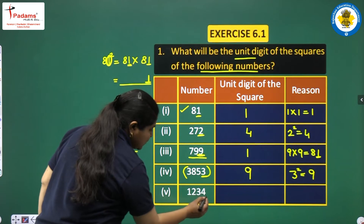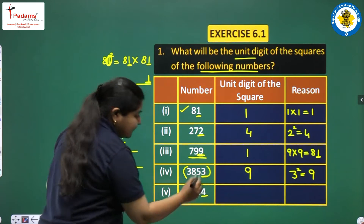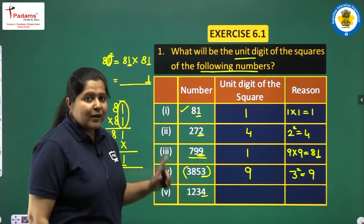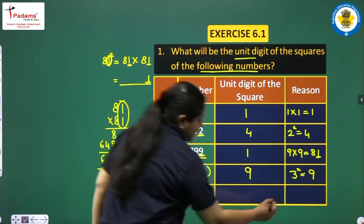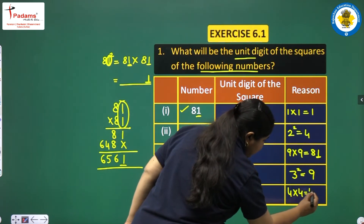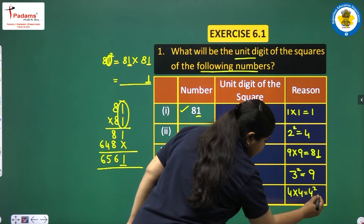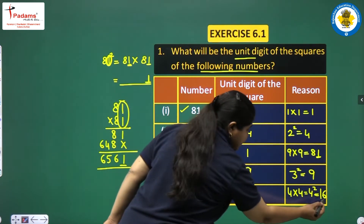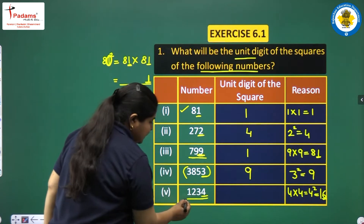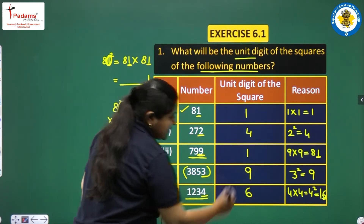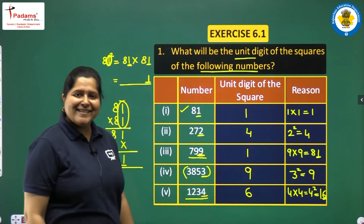For 1,234, the ones place digit is 4, and 4 squared is 4 into 4, which equals 16. The last digit is 6, so the square of this whole number ends in 6.